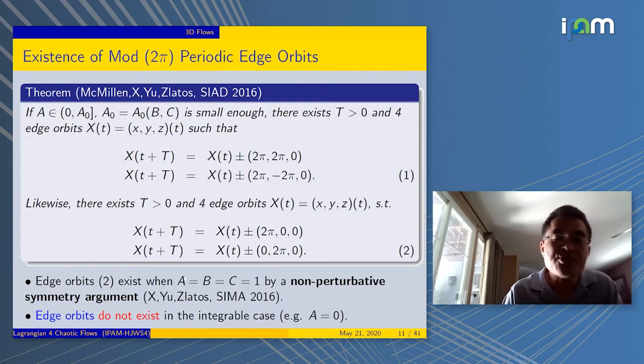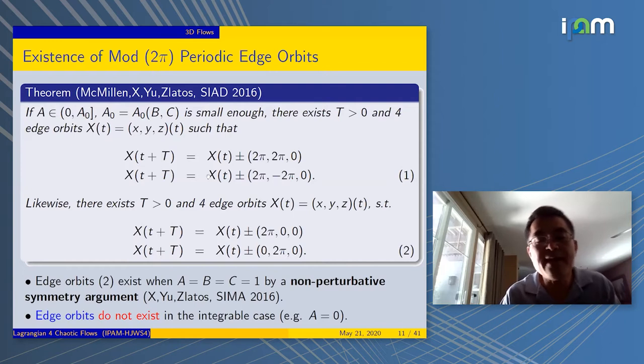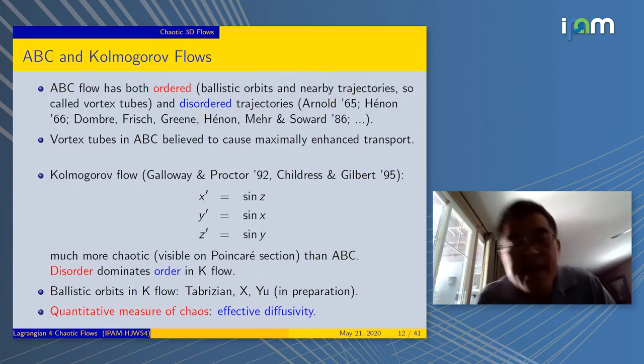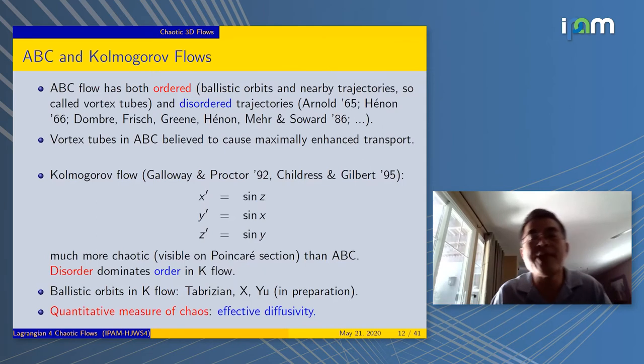And such trajectories, what we call the edge orbits, do not exist in the integrable case. If a were equal to zero, there is no such thing. So this is really the non-integrable behavior we're talking about, global and non-integrable. That's our second example where we have done some mathematical analysis.